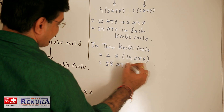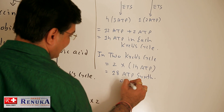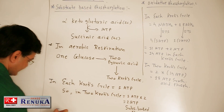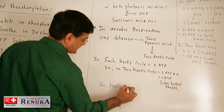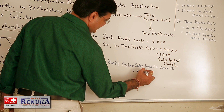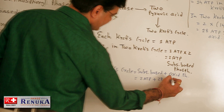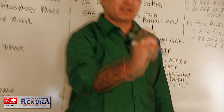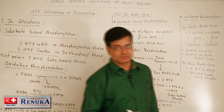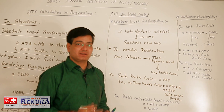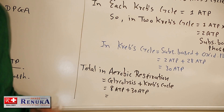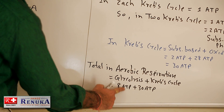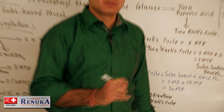In 2 Krebs cycles, 28 ATP are synthesized by oxidative phosphorylation. Total ATP from Krebs cycle: 2 ATP by substrate-based and 28 ATP by oxidative phosphorylation — giving 30 ATP from the Krebs cycle. So the total ATP in aerobic respiration from glycolysis and Krebs cycle: 8 ATP from glycolysis and 30 ATP from Krebs cycle.